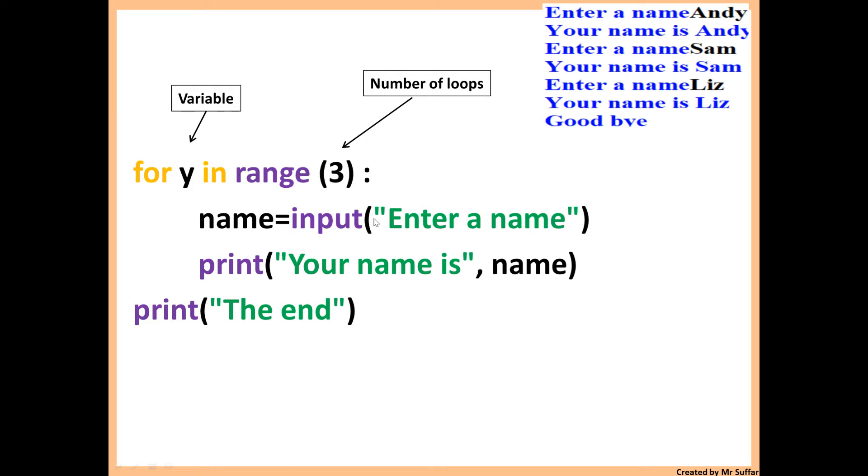We're asking the user for a name and then we're printing your name is name. As you can see on the top right, it says enter your name Andy, your name is Andy, and then it asks 3 times. These two lines of code will repeat 3 times. Then we're printing goodbye once.